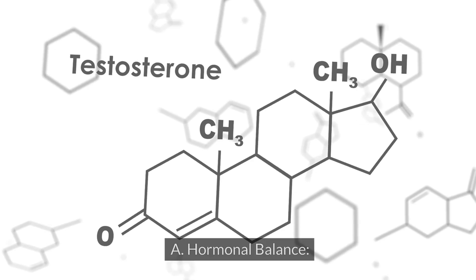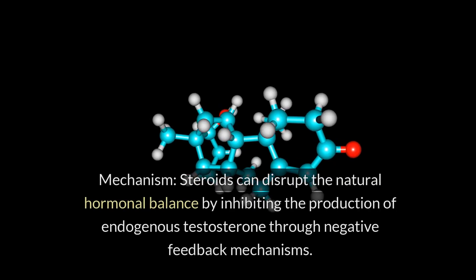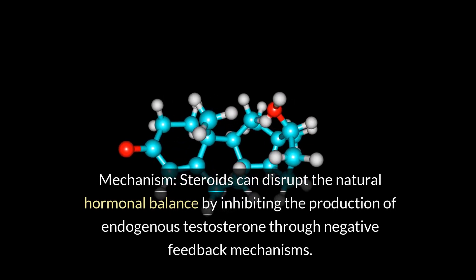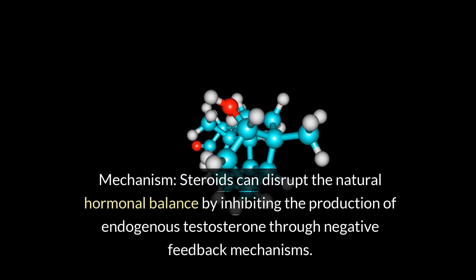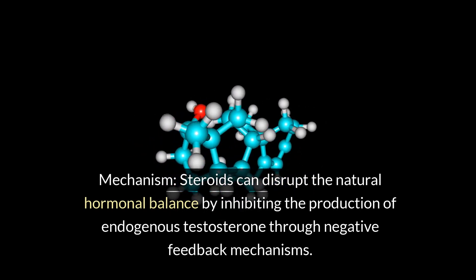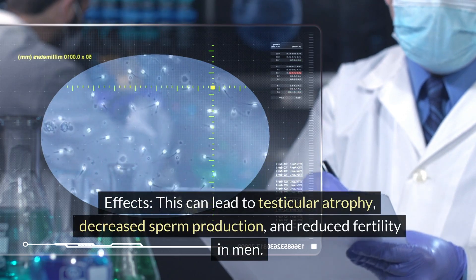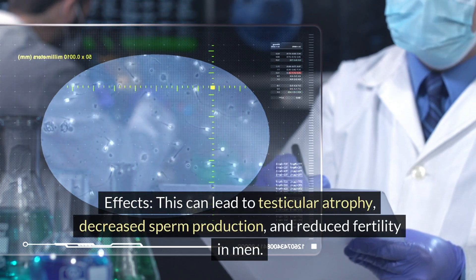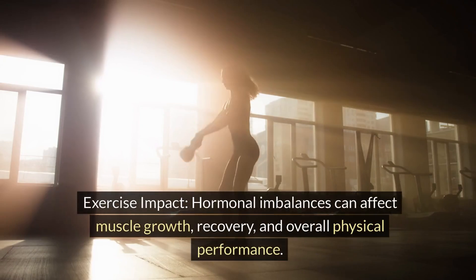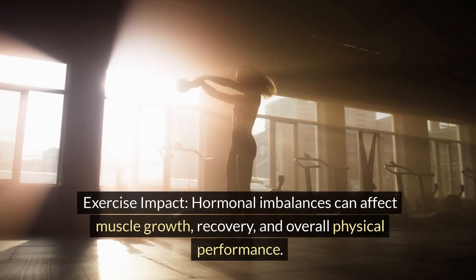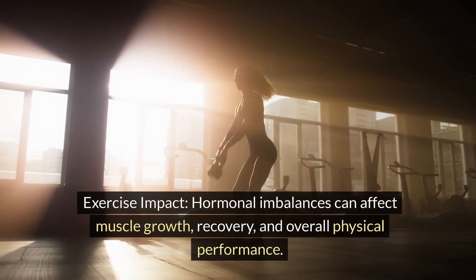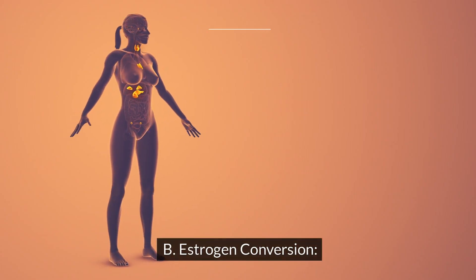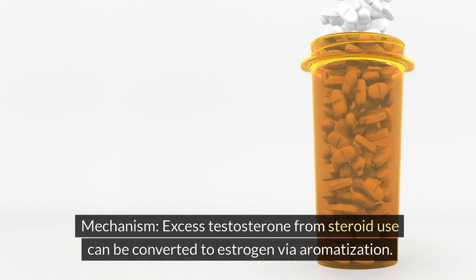Endocrine system effects — hormonal balance: Steroids can disrupt the natural hormonal balance by inhibiting the production of endogenous testosterone through negative feedback mechanisms. This can lead to testicular atrophy, decreased sperm production, and reduced fertility in men. Hormonal imbalances can affect muscle growth, recovery, and overall physical performance.